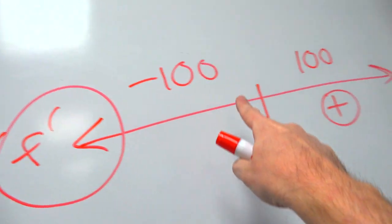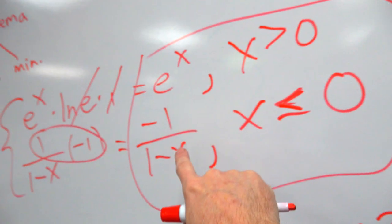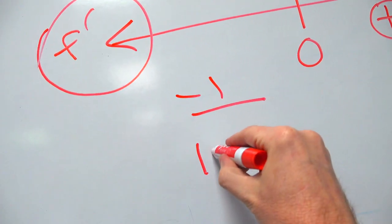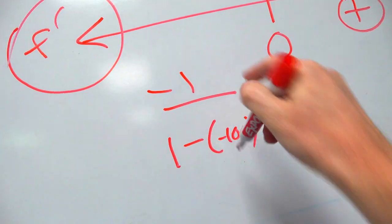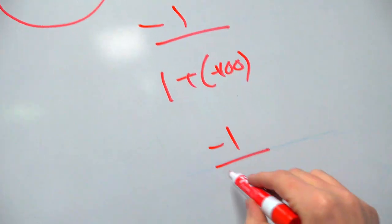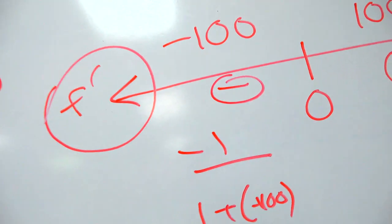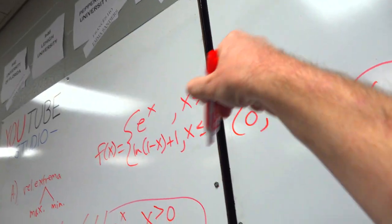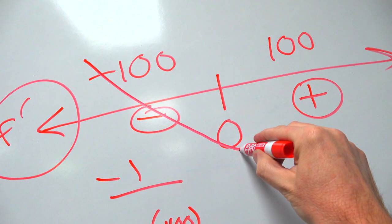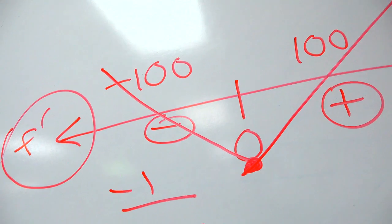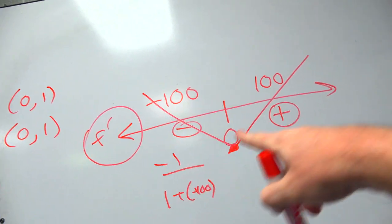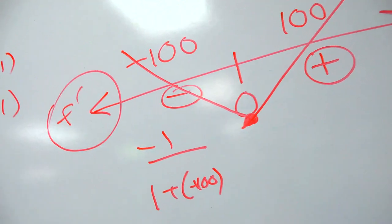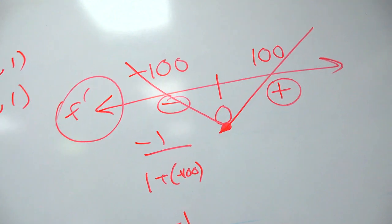Take negative 100 — that's less than 0. Plug it into the bottom equation: negative 1 over (1 minus negative 100) is negative 1 over 101. That's a negative fraction, a negative outcome. If the derivative is minus then plus, doesn't that mean the original function f must be decreasing to 0-comma-something and then increasing? Isn't that what the first derivative test tells us? Decrease, increase — that's a valley. It might be a crooked valley or a smooth valley, but it is definitely a valley. In fact, it is a crooked valley, but it's still a relative minimum.